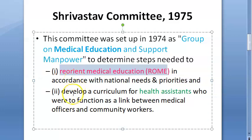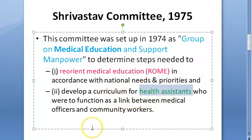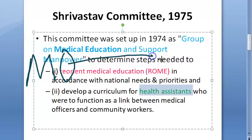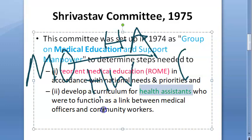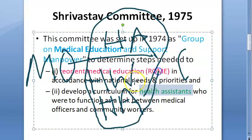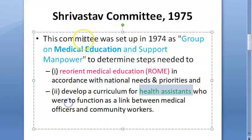They had to reorient medical education and then they had to develop a curriculum for health assistants. So they wanted to create this new role called health assistants — between these medical officers and trained professionals and community workers. They wanted some health assistants, so they created new roles like health worker, health assistant, etc. This was the other objective of the Srivastav committee on medical education and support manpower.